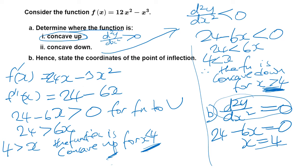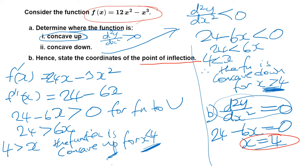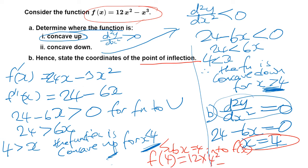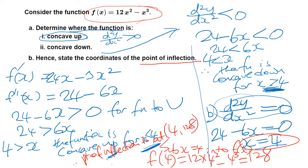Have I finished the question? No, because the question asks for the coordinates of the point of inflection — I've only found the x-coordinate. I need to substitute x = 4 into the original equation, not the second derivative. So f(4) = 12(4²) − 4³ = 12(16) − 64 = 192 − 64 = 128. Therefore the point of inflection is at (4, 128).